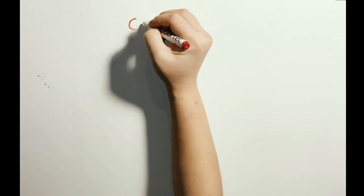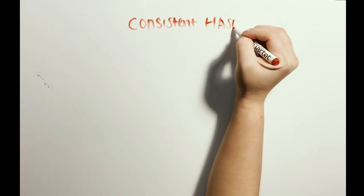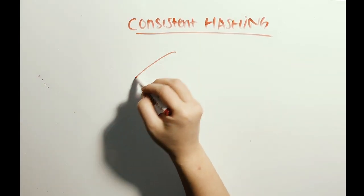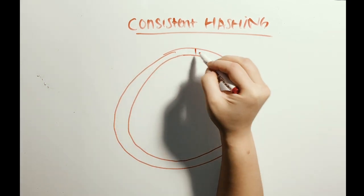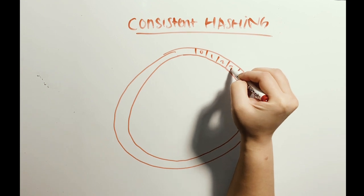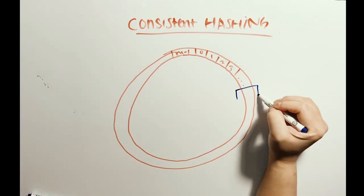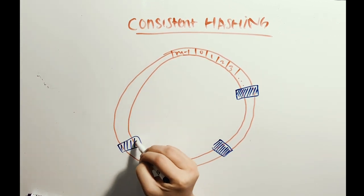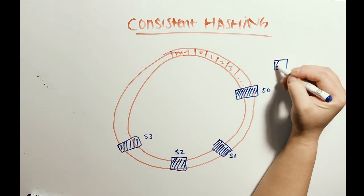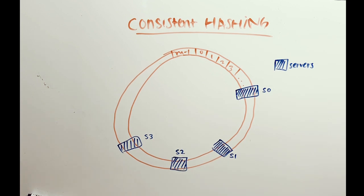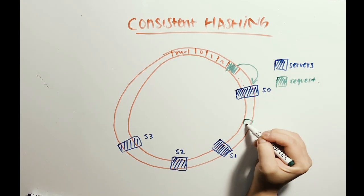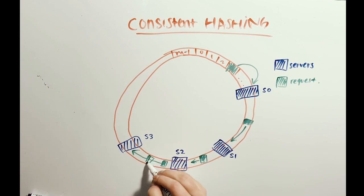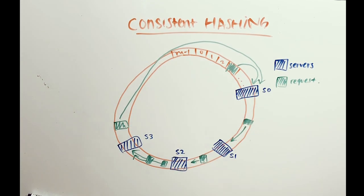This is where consistent hashing comes into play. In consistent hashing, we first make a conceptual ring of hashes. We map onto the ring the hashes of the request ID and the hashes of the server. However, each request ID will go to the server that is immediately clockwise to them. Because of the way we map onto the hash ring in a clockwise direction, the change to your servers will be smaller and more uniform when a new server is added. When a new server is added, the only server that is affected is the immediate neighbor.